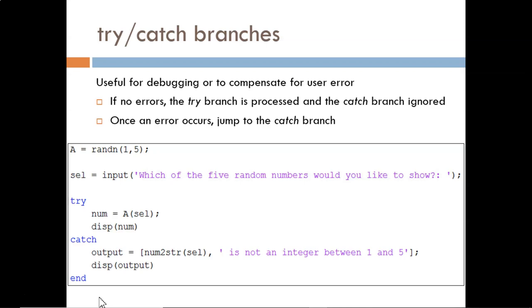First, the try branch is attempted. If everything runs successfully, then the catch branch is never used. But if an error occurs within the try branch, then all the code within the catch branch is processed.